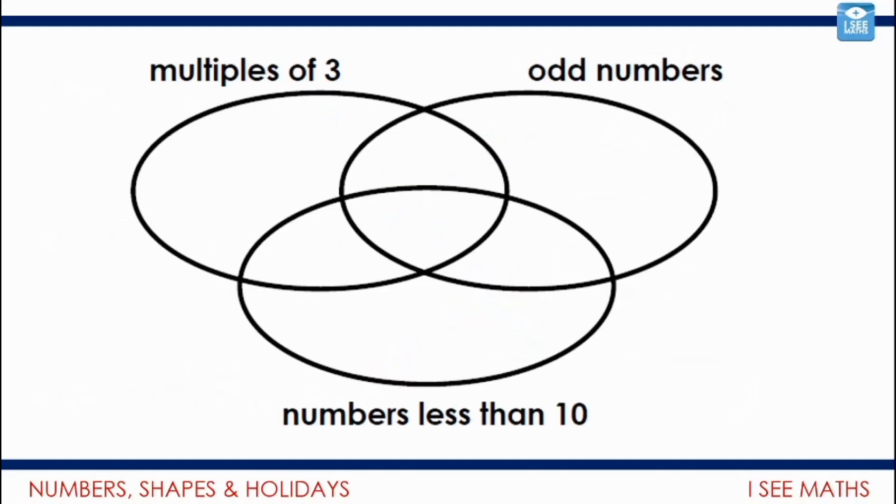Let's have a look at another kind of Venn diagram. Here's another of my favorites. It's a three-way one. I've got multiples of three, odd numbers, and numbers less than ten. For example, for a number to go in this section, it is a number that's less than ten because it's in this oval here, and it's also a multiple of three. But it's outside of the odd numbers section. So I'd have to think about numbers that can go there, for example.